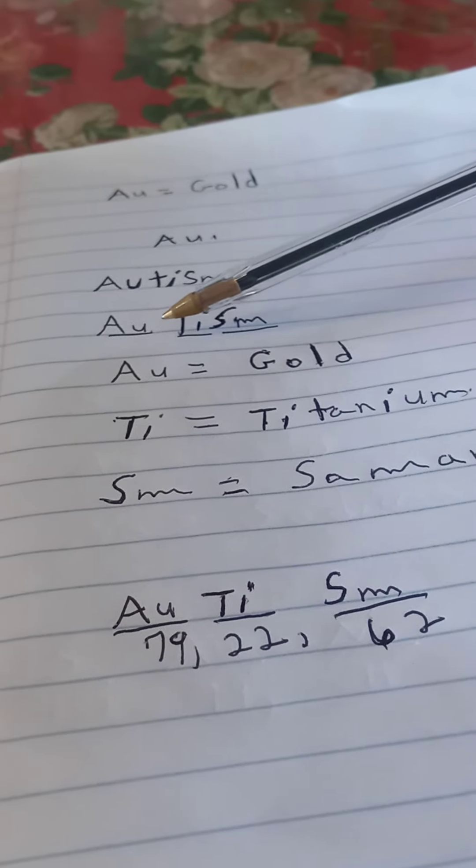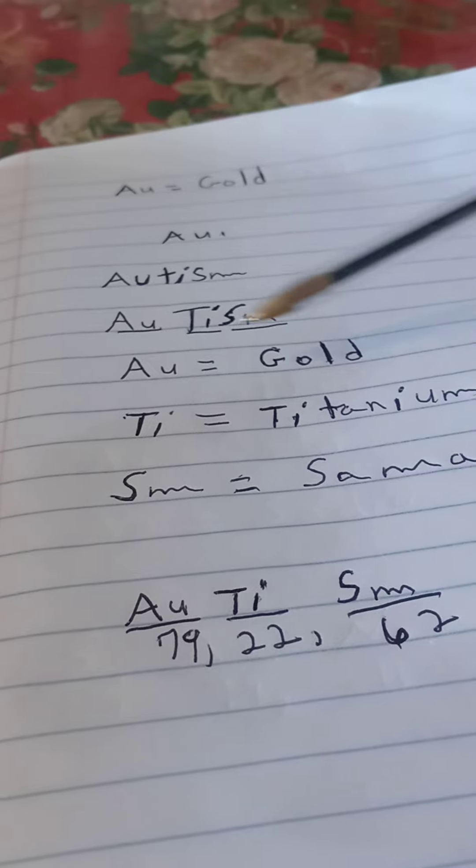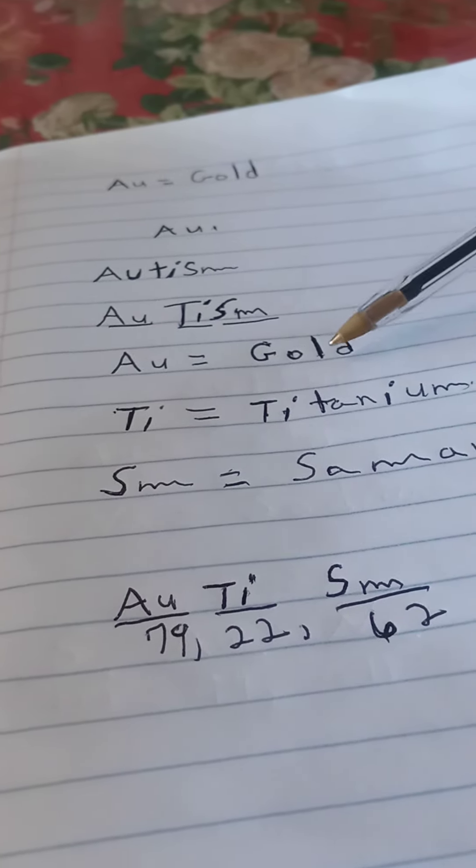Capital A and a small u is for gold. See here? Capital A and a small u equals gold. The chemical symbol is A-U, the element is gold.